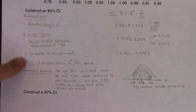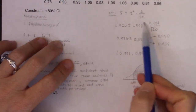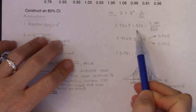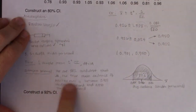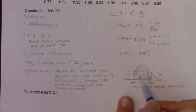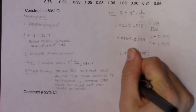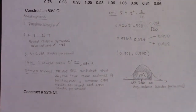Now let's construct a 92% confidence interval using the same data. The assumptions stay the same, the title doesn't change much — only the t-star critical value changes. On the graph, instead of 10% on each tail we'd have 4% on each side, making the interval a bit wider. So the only thing to find is the new t-star critical value.